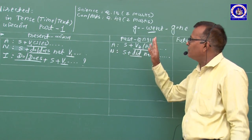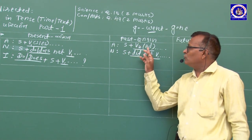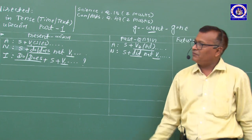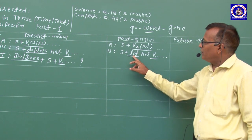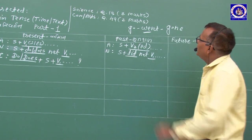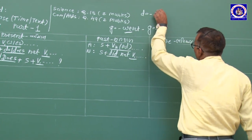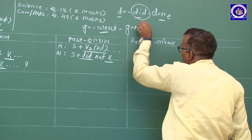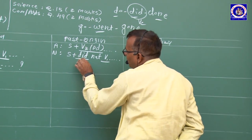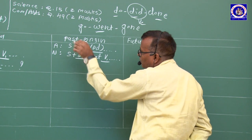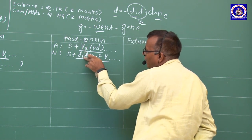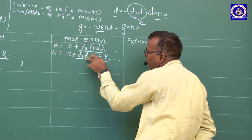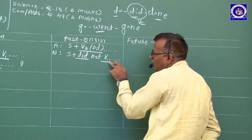Simple Past — Assertive/Declarative Sentence: Verb 2nd form. Negative વાક્ય અને Interrogative વાક્ય: did + not + Verb (plain). Did = do/does નું Second Form (2nd form of 'do'). Negative: did not + plain verb. Interrogative: did + subject + verb. Did વાપર્યા પછી ક્રિયાપદ plain form.